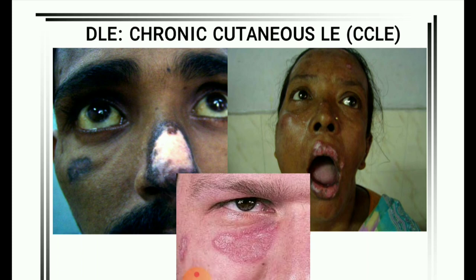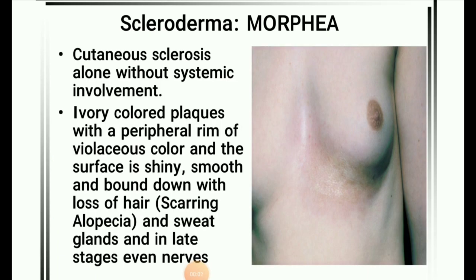Next image: Chronic cutaneous lupus erythematosus (CCLE). Next image: Scleroderma — morphea (cutaneous sclerosis alone without systemic involvement). Ivory-colored plaques with a peripheral rim of violaceous color; the surface is shiny, smooth, and bound down with loss of hair (scarring alopecia), sweat glands, and in late stages even nerves.